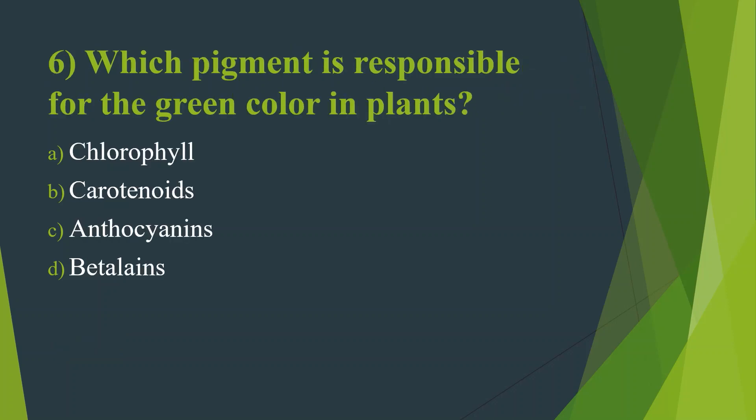Sixth question: Which pigment is responsible for the green color in plants? Option A, Chlorophyll. Option B, Carotenoids. Option C, Anthocyanins. Option D, Beta-lanes. Answer is Option A, Chlorophyll.